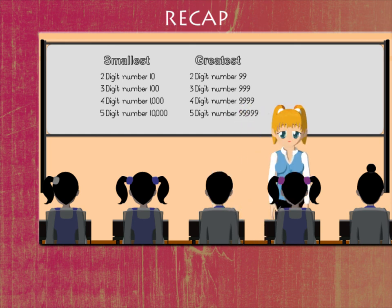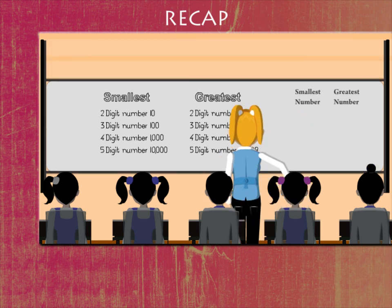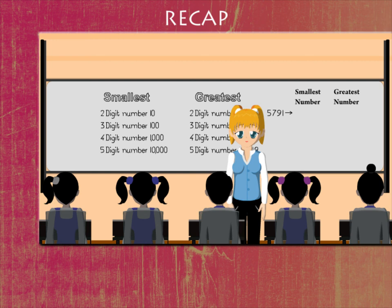Now children, let's revise the smallest and the greatest of 4-digit numbers. The digits are 5, 7, 9 and 1.